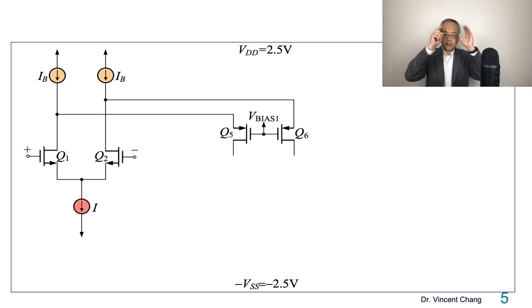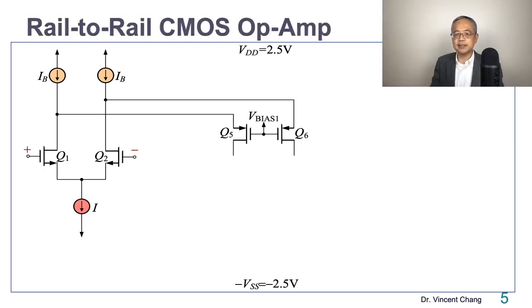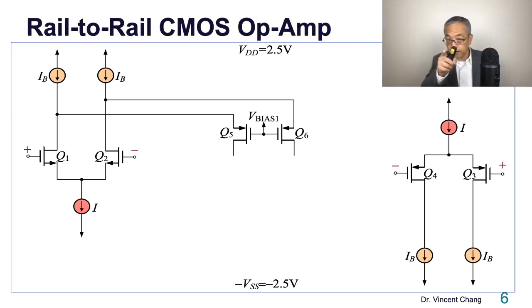This is one folded cascode. And I'm going to bring in another one, but with an opposite polarity. So opposite polarity means this one is the NMOS differential pair, but the second one is the PMOS differential pair. Because it's the PMOS, so it's kind of upside down. So orange NMOS to red, and red PMOS to orange.